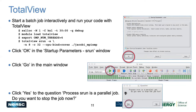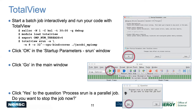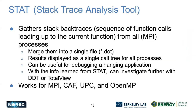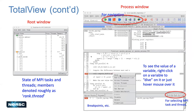TotalView is another GUI tool. You start an interactive batch job, load the TotalView module, and start the application using the appropriate command, which requires clicking certain buttons before it starts. Once TotalView is started, this portion shows the source code, from which you can define breakpoints, click on a variable to check its values, and see variable values displayed as well. There are many tools to check the status of your program while it runs.